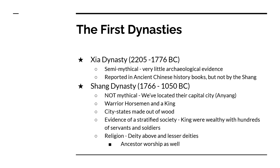We know without a doubt that the Shang were real. In the early 1920s, archaeologists discovered the capital city of the Shang, called Anyang, outside of modern-day Beijing. Oracle bones were also discovered. Basically the Shang would take turtle shells, heat them up, and then break them — depending on how they broke, they would be able to tell their future or fortune. We have found those dedicated to the Shang dynasty.